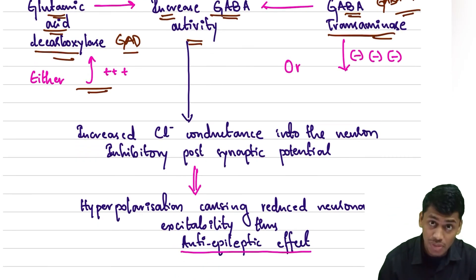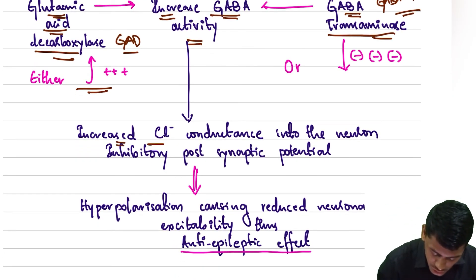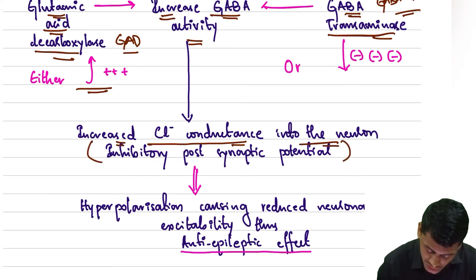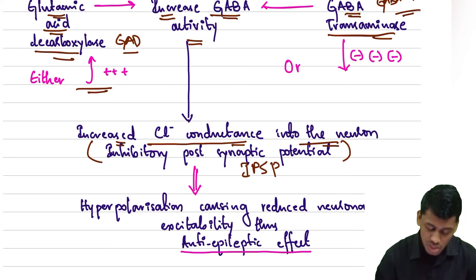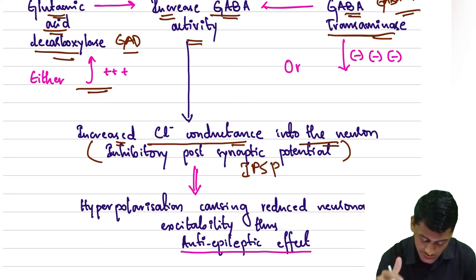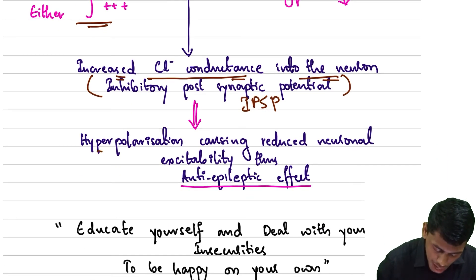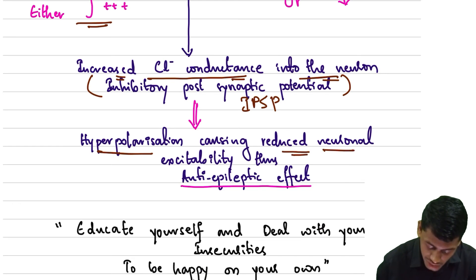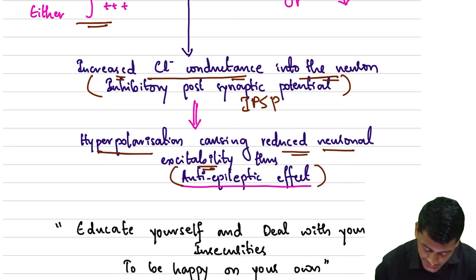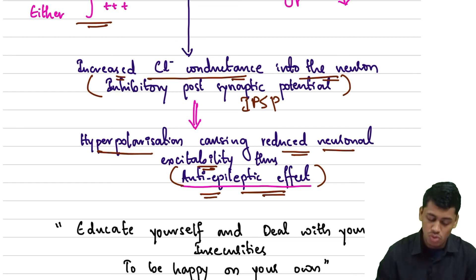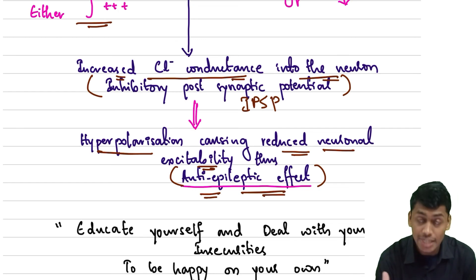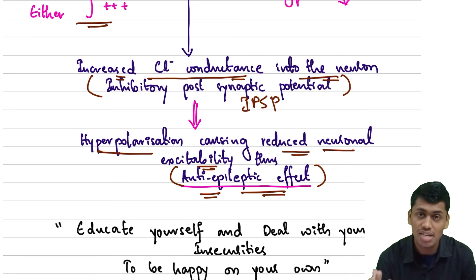When GABA activity is increased, there is increased chloride conductance into the neuron, producing an inhibitory post-synaptic potential (IPSP). This causes hyperpolarization, resulting in reduced neuronal excitability, and finally produces the anti-epileptic effect.